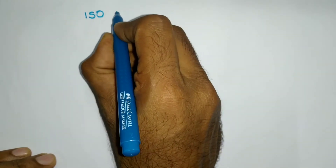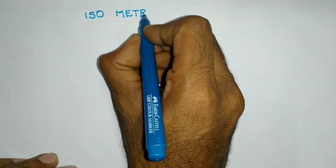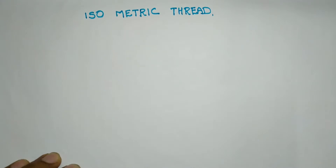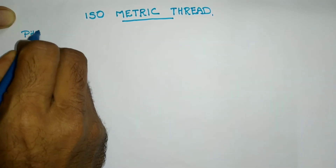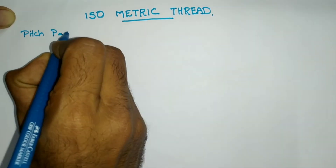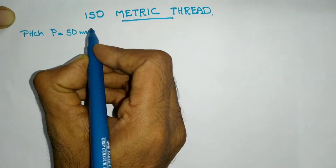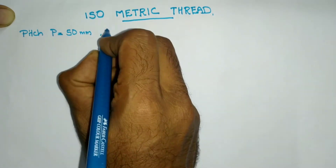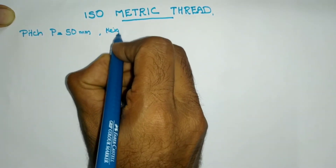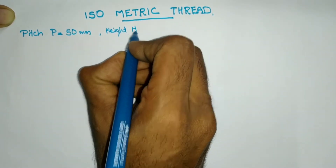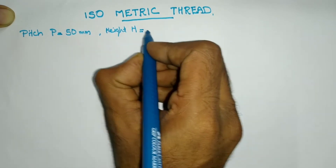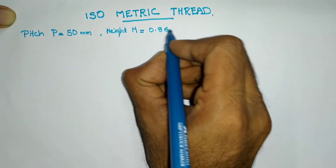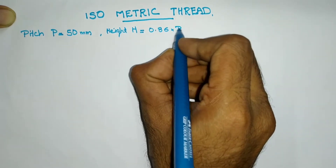Now let us draw an external and internal metric thread. For drawing a metric thread, we need the pitch of the thread P. Here we are assuming a pitch of 50 mm. From the value of P, we can calculate the height of the thread using the formula h = 0.86603 × pitch. Here it is 43 mm.